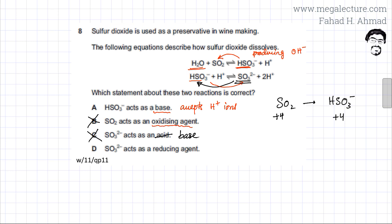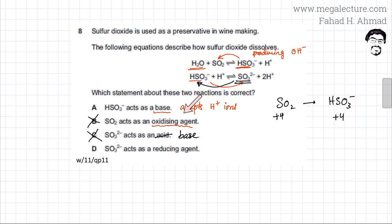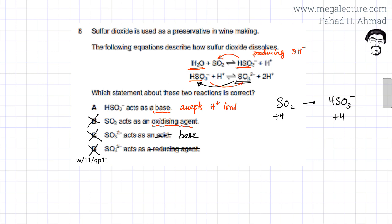The last statement says SO3²⁻ acts as a reducing agent, which is also incorrect. There is no redox reaction occurring in either equation — there is no change in oxidation state. So terms like oxidizing agent or reducing agent do not apply here. Option D is definitely incorrect. That leaves only option A, that HSO3⁻ acts as a base in the first reaction, as the correct answer.